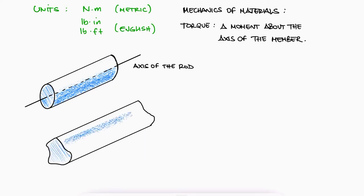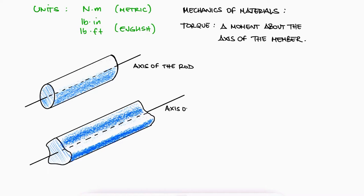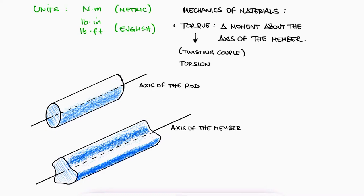Even though the same definition would not hold for more irregular shapes, intuitively, you could talk about the axis of a member or component, and most people would understand what you're referring to. Luckily, we usually talk about torques, twisting couples, and torsion for circular cross-section members.